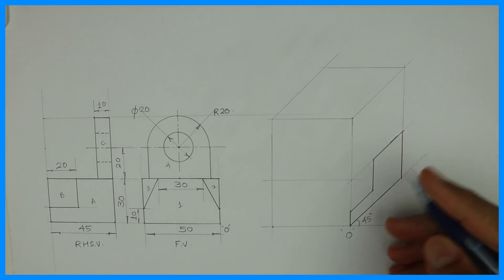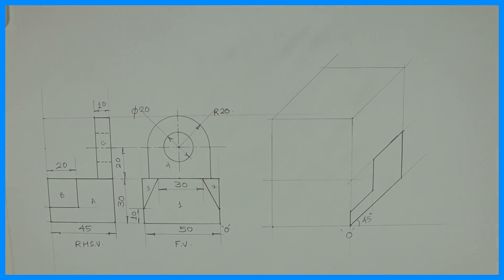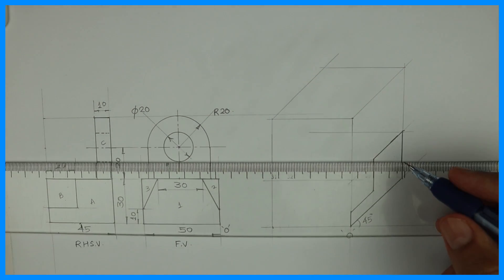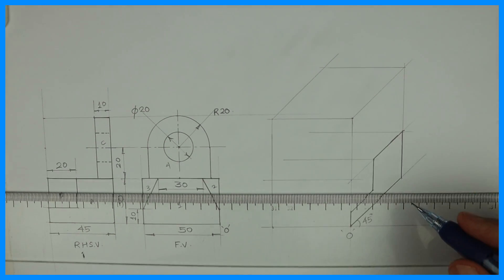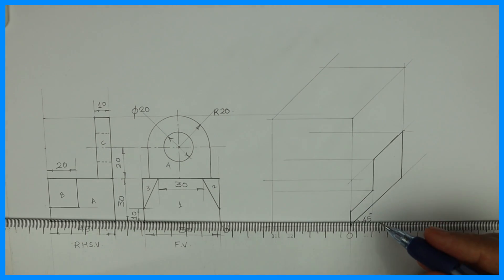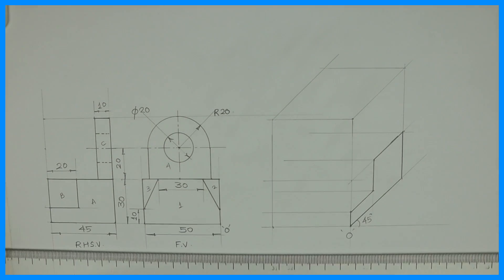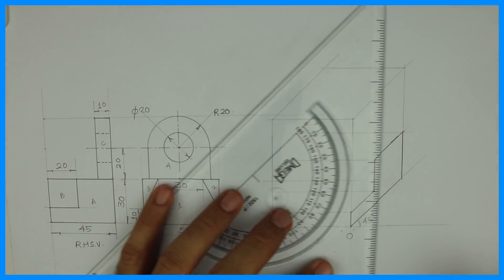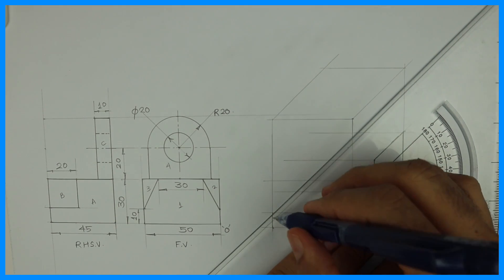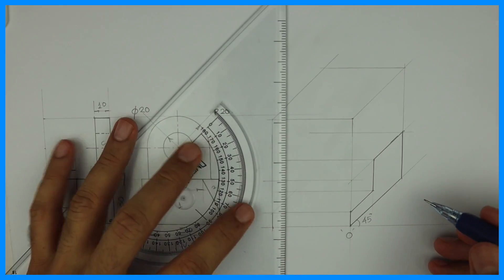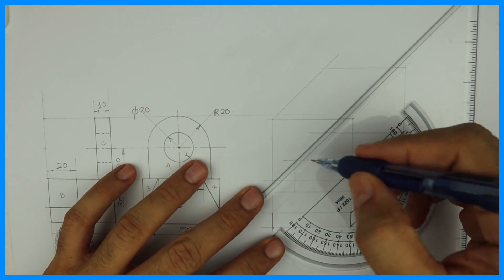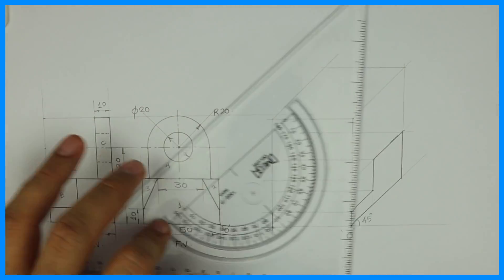Then we will draw part 1. We will project all these lines — 50, 50, 50 — and then join them. Same concept: whatever is on the left side, the same thing is on the right side. With that concept we can draw this portion of the box.